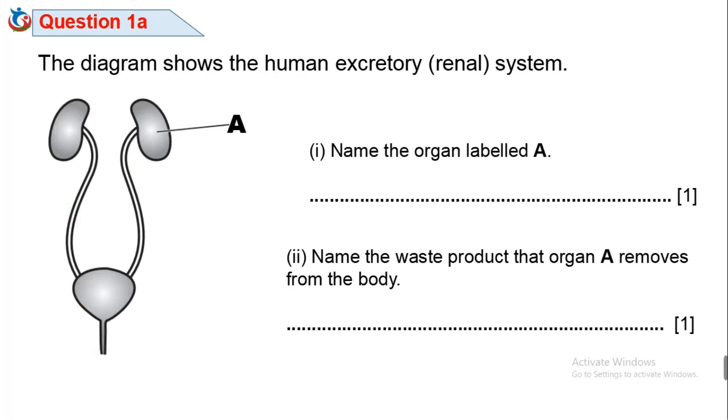Question 1A. The diagram shows the human excretory renal system. 1A1. Name the organ labeled A.